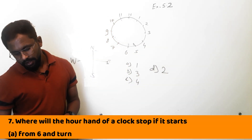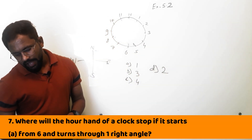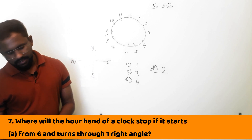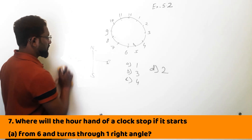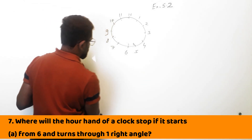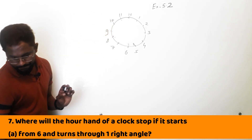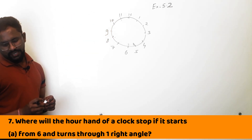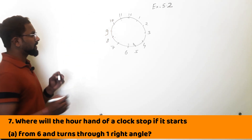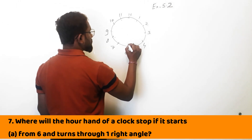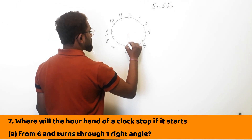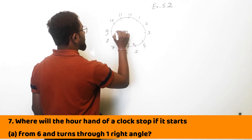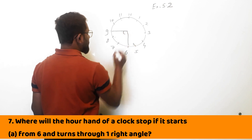Question 7: Where will the hand of a clock stop? First part: starting from 6 and turns through 1 right angle clockwise. Starting from 6 and making 1 right angle, so it will be at 9.